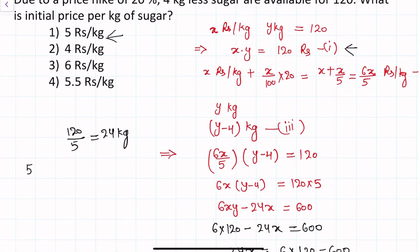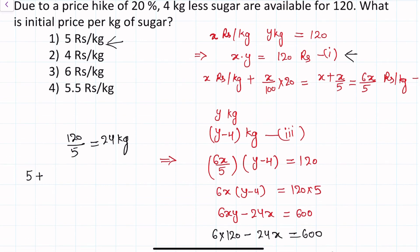Let's verify: at 5 rupees, if we increase the price by 20%, that is 1 rupee increase, so 6 rupees per kilo. We can buy 120 divided by 6 which is equals to 20 kg, and initially we were buying 24 kg. Here we are buying 4 kilo less sugar, so option first is correct.